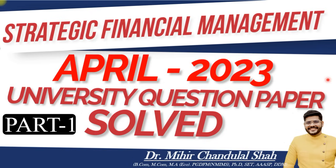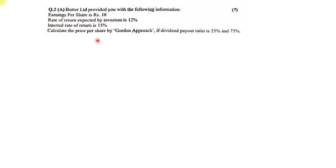Let us start with the very first question. Under question number 2A, A Limited provided the following information: the Earning Per Share is rupees 18, the rate of return expected by the investor is 12 percent, and the internal rate of return is 15 percent. We are asked to calculate the price per share by Gordon's approach if the dividend payout ratio is 25 percent and 75 percent - two situations are given.